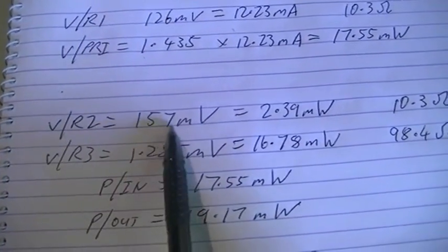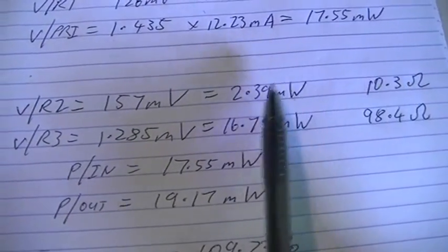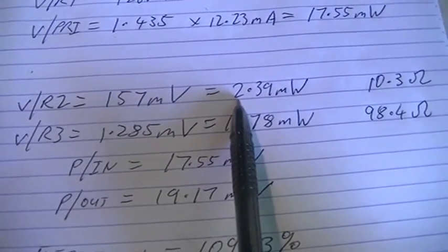We had 157 mV over R2, which is also 10.3 ohms, so the dissipated power over that resistor is 2.39 mW.